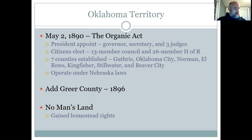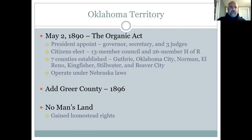This Organic Act said that the president of the United States would appoint the governor of Oklahoma Territory, appoint a secretary, and three Supreme Court judges — state Supreme Court judges. Citizens could elect a 13-member council and a 26-member House of Representatives. The legislature would meet no more than 60 days every two years, except for the first session, which could last 120 days, since they had a lot of work to establish this new territory.